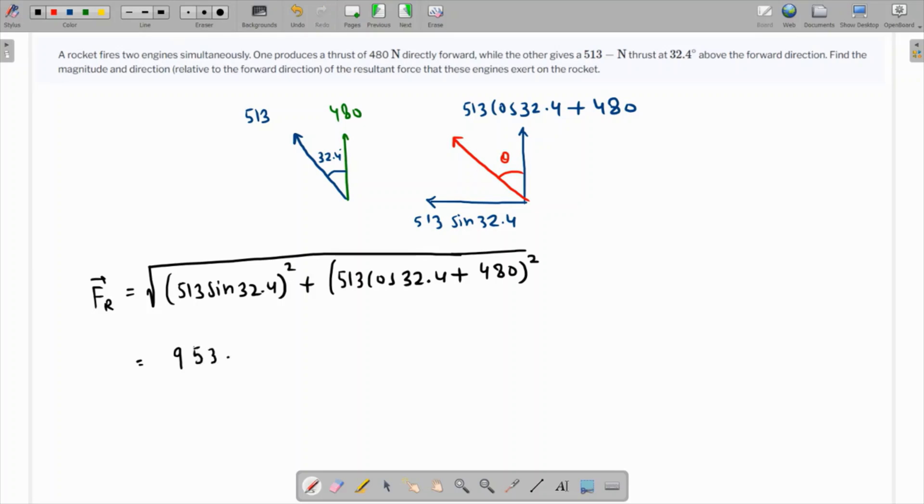953.62 newtons. So this is the required resultant force. If we talk about the angle, then tan theta equals 513 sine 32.4 over 513 cos 32.4 plus 480.